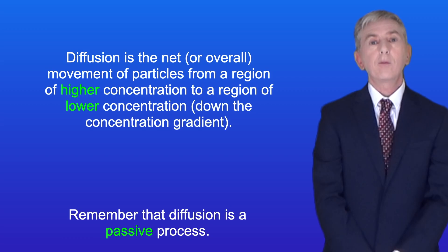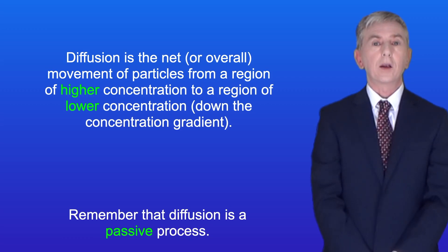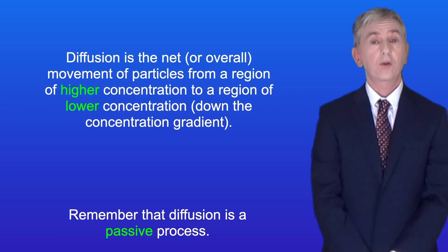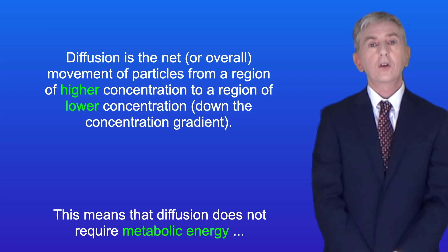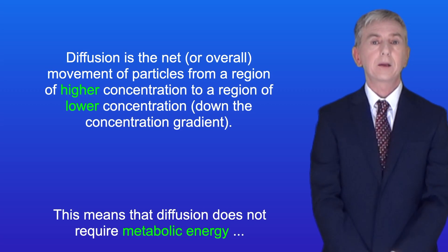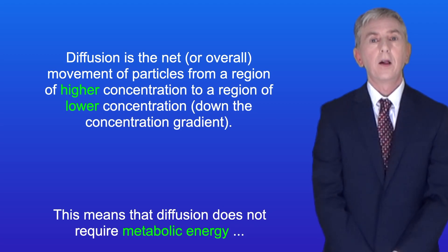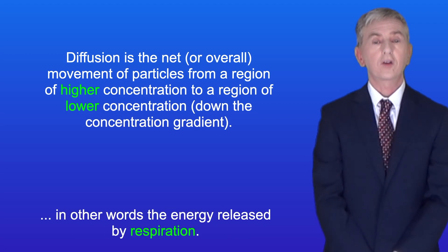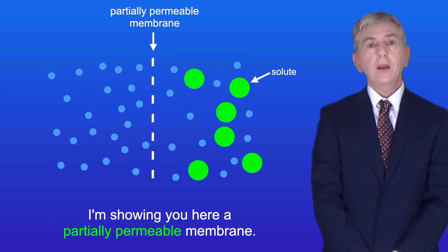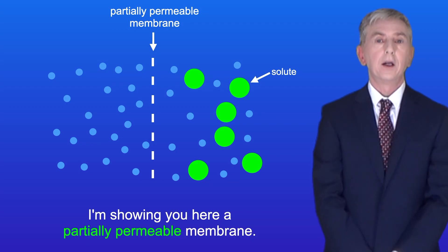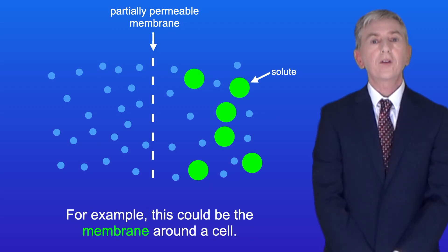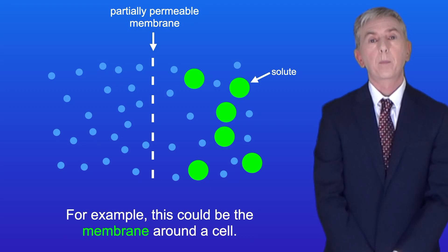Remember that diffusion is a passive process. This means that diffusion does not require metabolic energy, in other words the energy released by respiration. I'm showing you here a partially permeable membrane, so for example this could be the membrane around a cell.